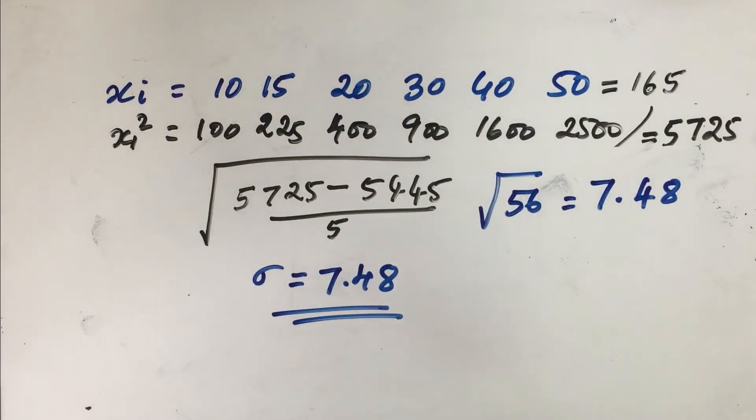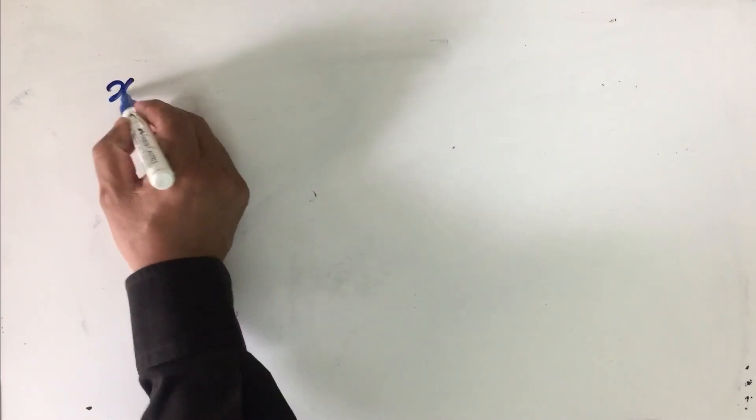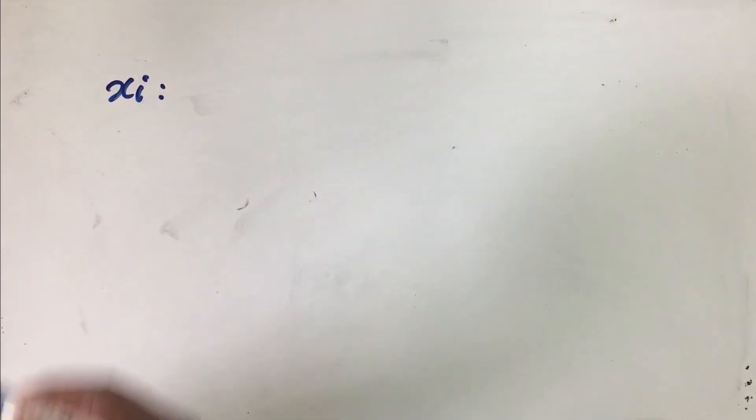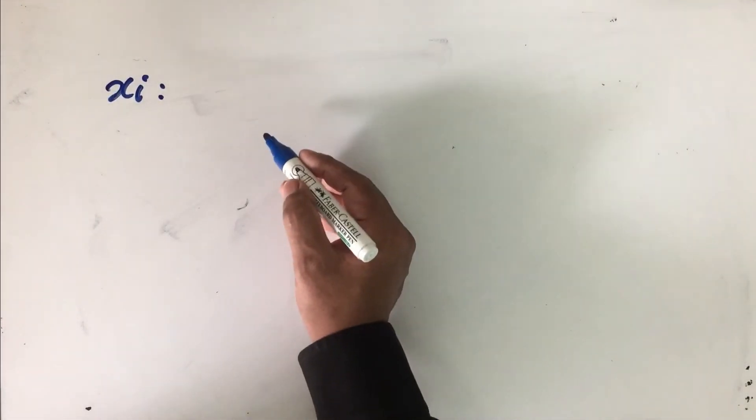Now these numbers can be any xi value which you observe. So let me give you a small exercise. You are encouraged to calculate standard deviation of the following distribution. Assume these are the number of flowers that are formed in a particular species of roses.